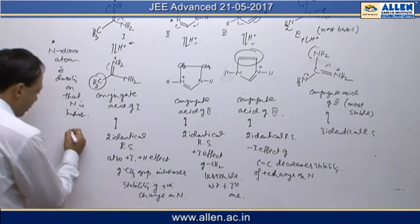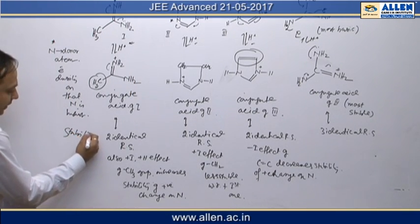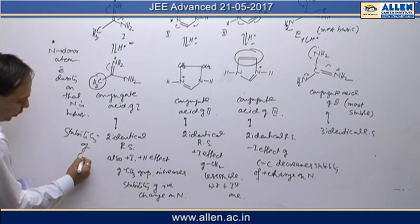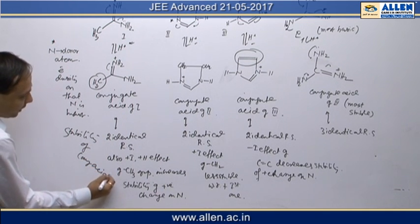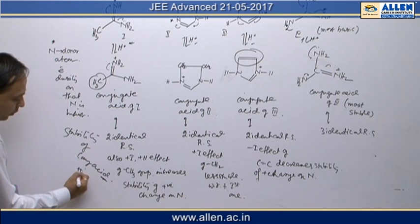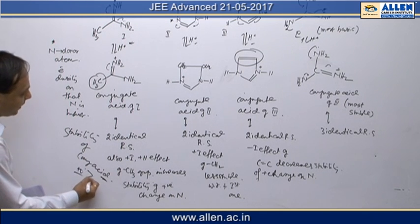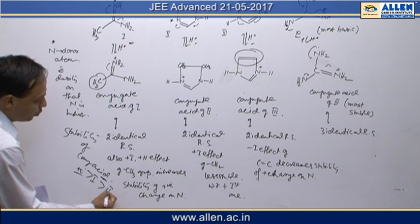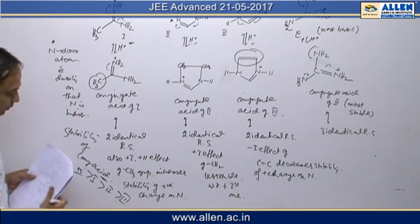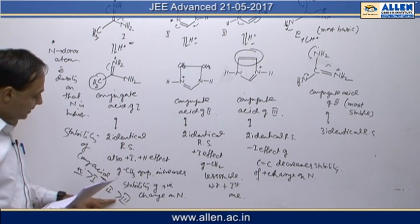So we can go through stability of conjugate acid, stability of conjugate acid, it's nothing but 4, it's a 4, then it's a 1, then it's a 2, then it's a 3. And as stability of conjugate acid is this, basic strength order should be, basic strength order should be—